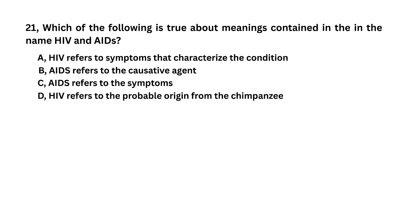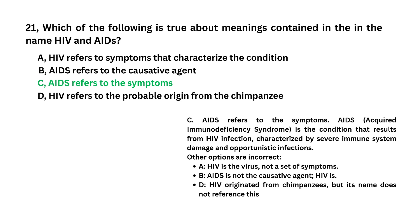Which of the following is true about the meaning contained in the names HIV and AIDS? HIV refers to symptoms that characterize the condition; AIDS refers to the causative agent; AIDS refers to the symptoms; HIV refers to probable origin from the chimpanzee. AIDS refers to the symptoms is the answer.